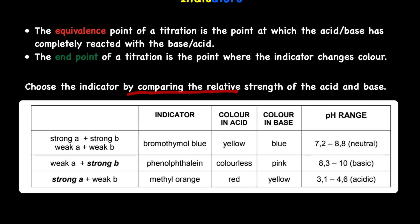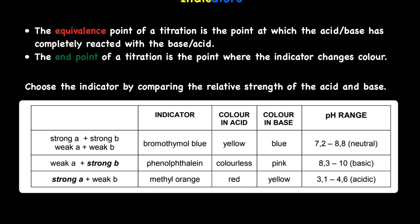Choose the indicator by comparing the relative strength of the acid and base. There are three indicators we're going to look at: bromothymol blue, phenolphthalein, and methyl orange.